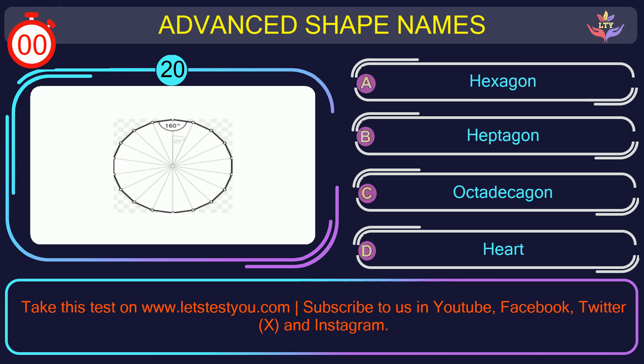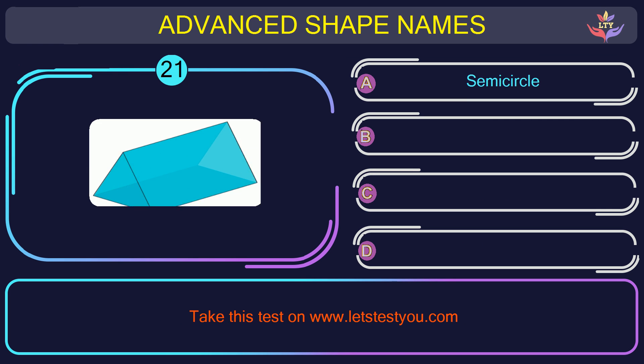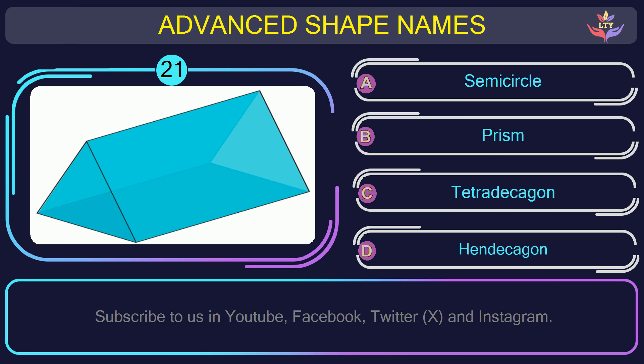Question number twenty. Guess the name of the shape in this picture. The correct answer is option C. Octadecagon. Octadecagon is a polygon with 18 sides.